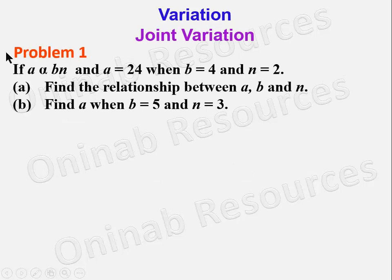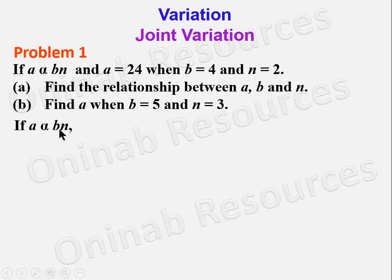Problem 1: If a varies jointly as b and n, and a = 24 when b = 4 and n = 2, find (a) the relationship between a, b, and n, and (b) find a when b = 5 and n = 3. In the solution, if a varies jointly as b and n, this is translated as a = kbn.